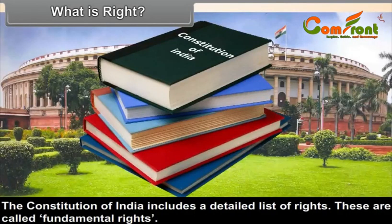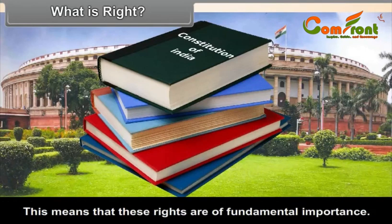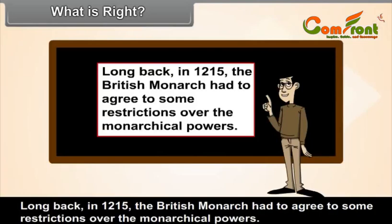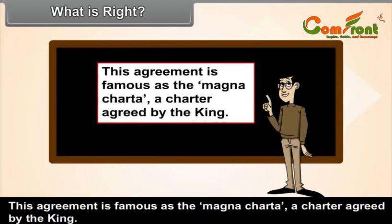The Constitution of India includes a detailed list of rights, called fundamental rights, meaning that these rights are of fundamental importance. Long back in 1215, the British monarch had to agree to some restrictions over monarchical powers. This agreement is famous as the Magna Carta, a charter agreed by the king.